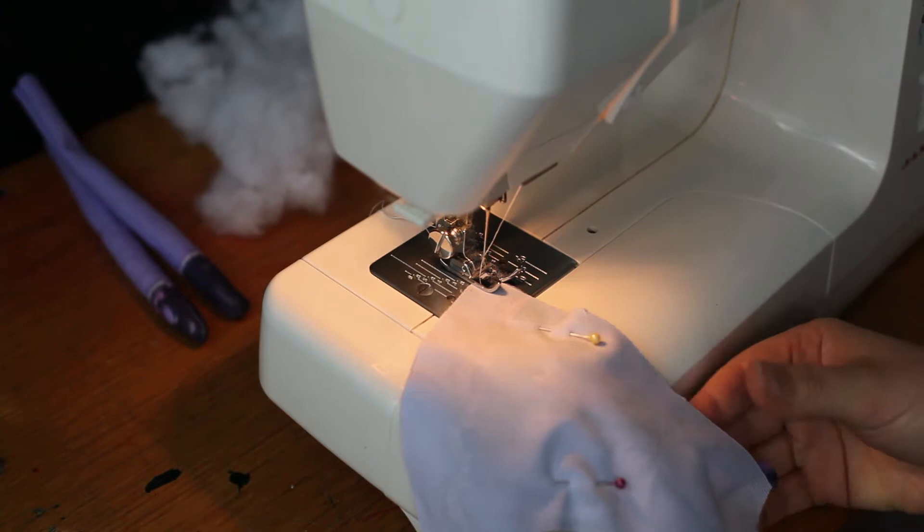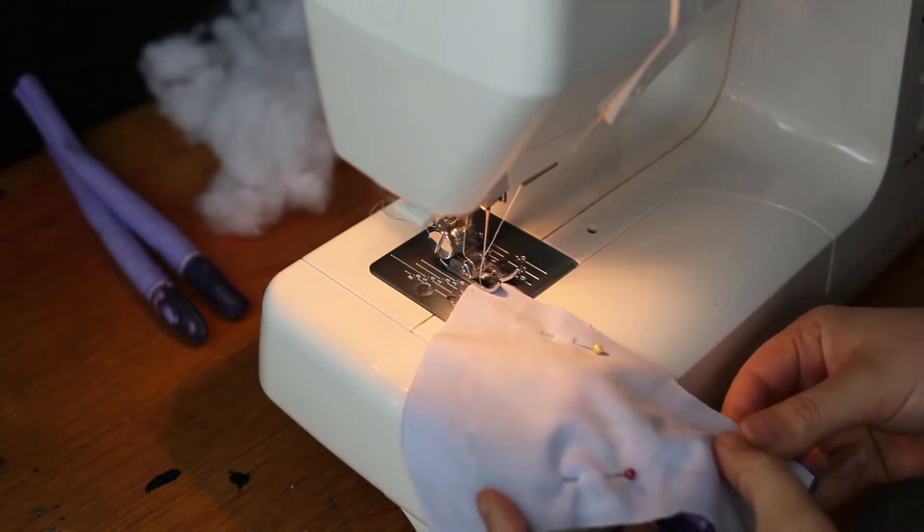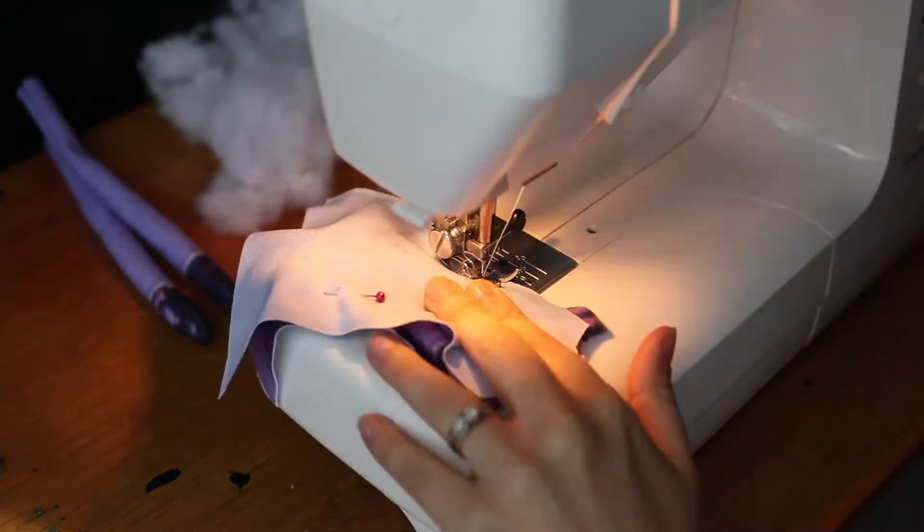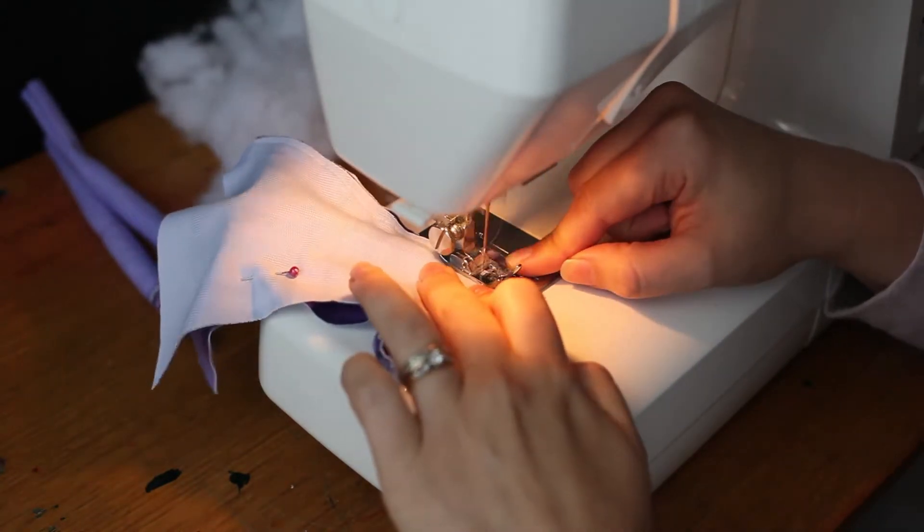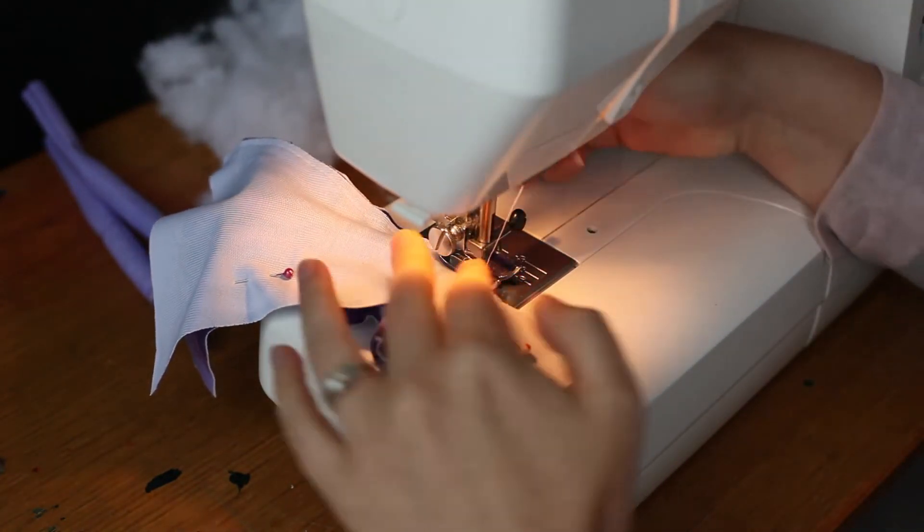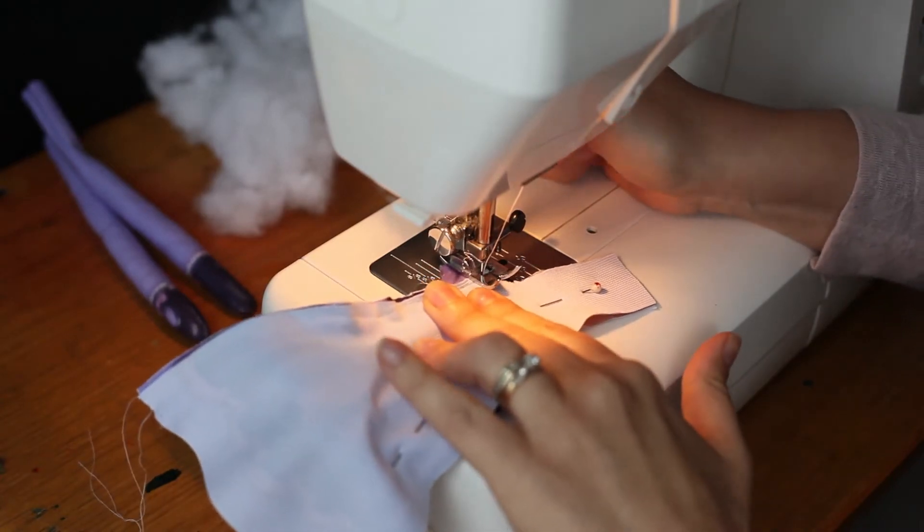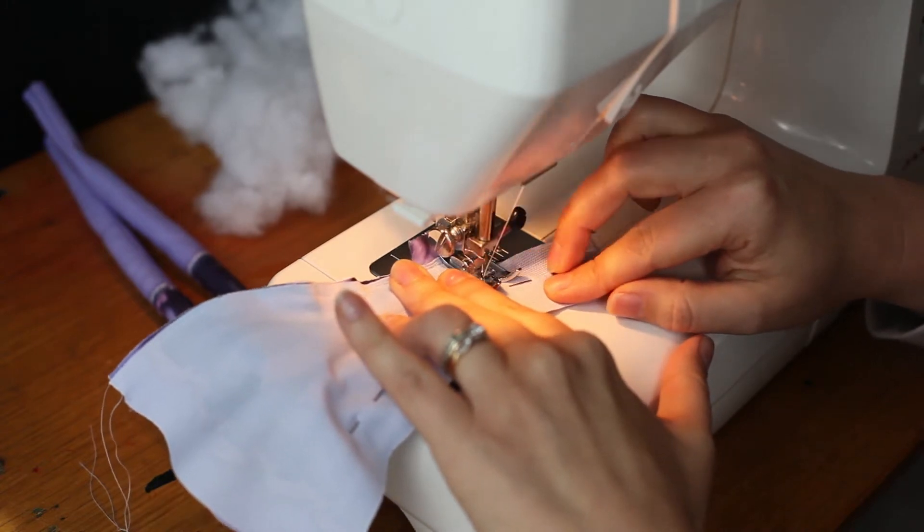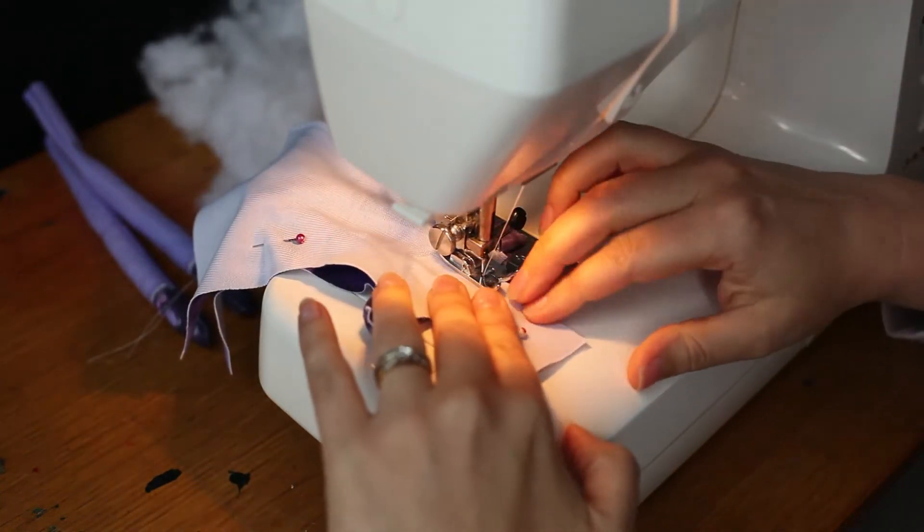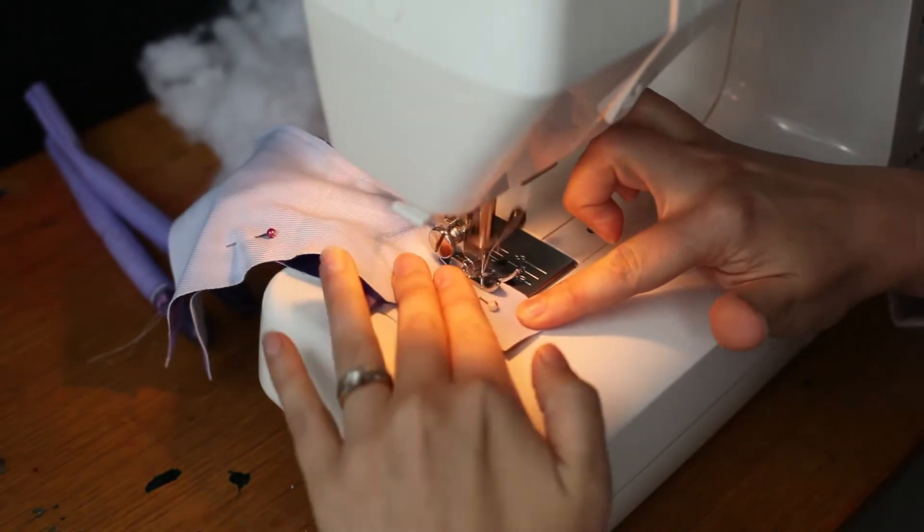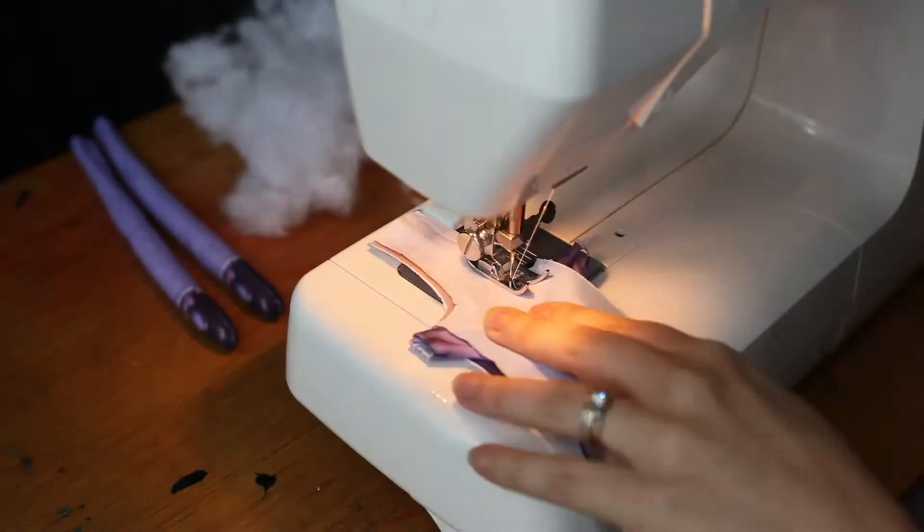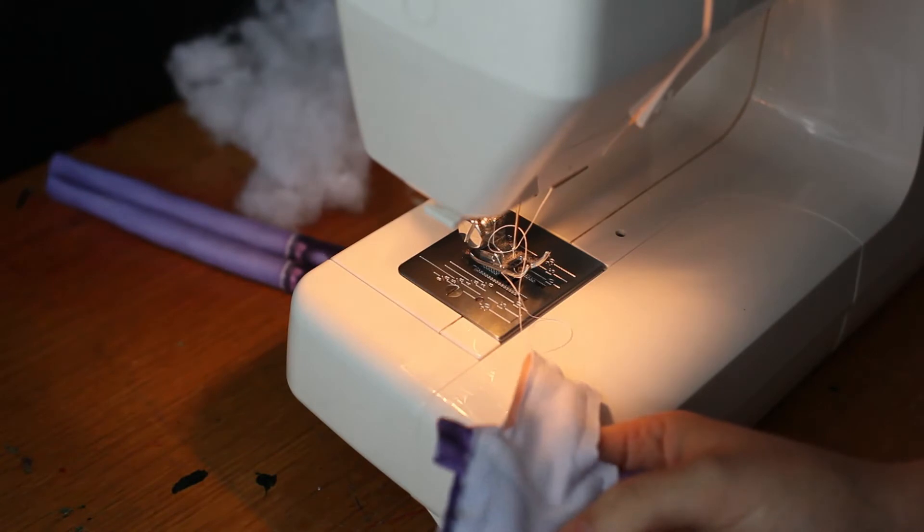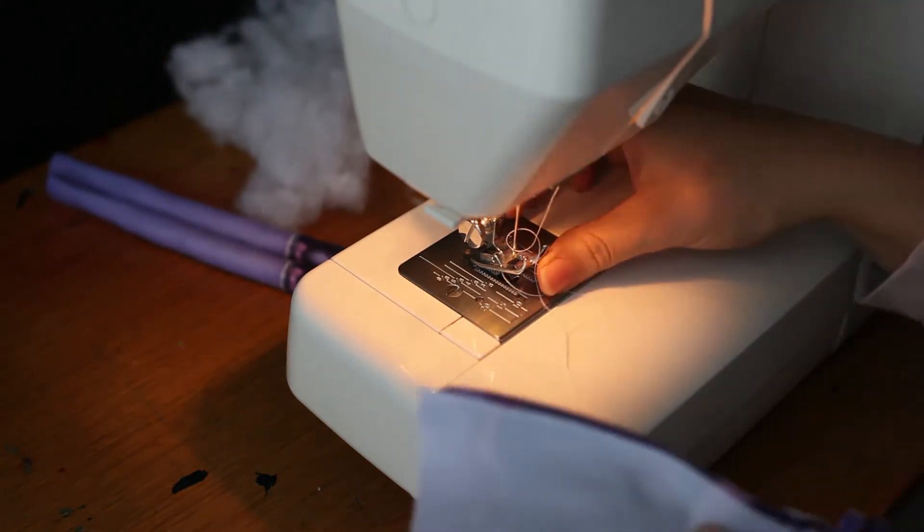So now we're sewing around the body and this bit can be a little bit tricky but you just go slowly and it'll all work out. A nice sharp corner on the shoulder. And then up around the neck. It's come a bit close here so we're just going to fix that up.